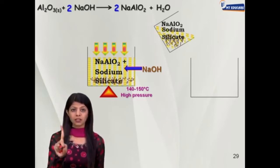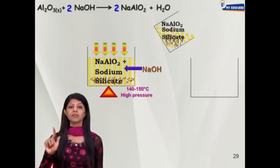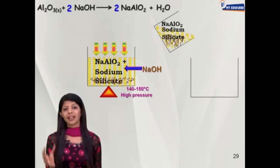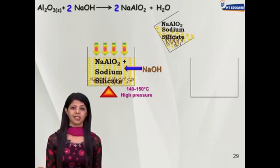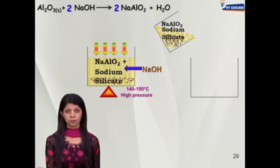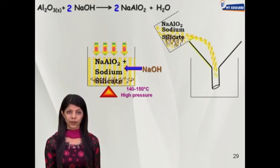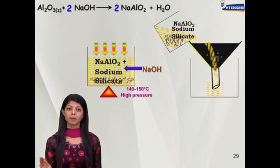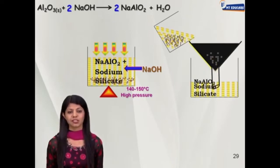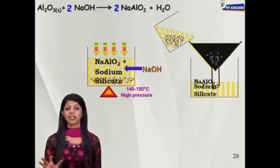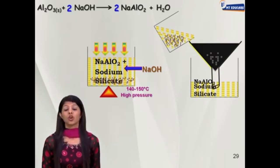Now in the digester we have two liquids — sodium aluminate and sodium silicate — and one solid: iron oxide pieces. Iron oxide pieces are impurities we don't want. Since they are in solid form we can filter the liquid. The iron oxide pieces remain on the filter paper in the funnel, and we collect the liquid — which is sodium aluminate and sodium silicate solution.